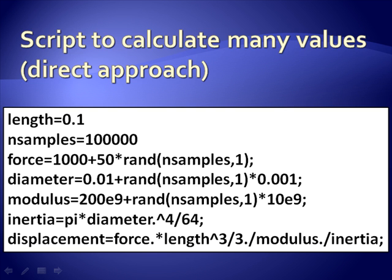I calculate the moment of inertia. Note I use this dot operator here. Dot caret is exponentiation but the dot says do it element by element. So rather than taking this diameter vector and trying to multiply it by itself using vector math four times, it just takes each element in the diameter vector and takes it to the fourth power.